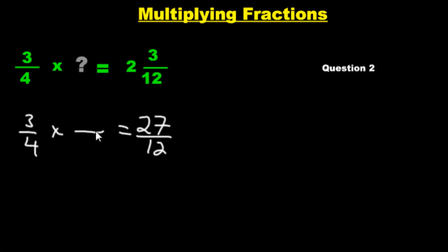So what's that fraction going to be? Think logically. 3 times something equals 27. Yes. 3 times 9. 4 times something makes 12. Yep. 9 over 3.